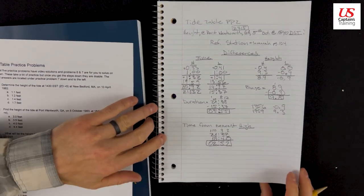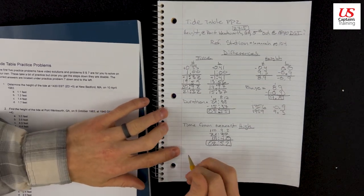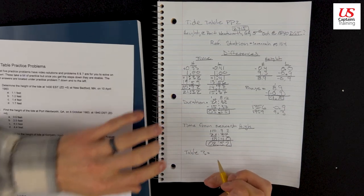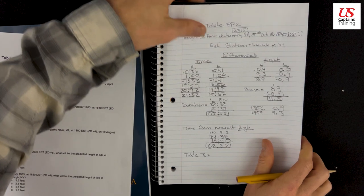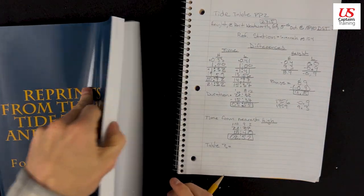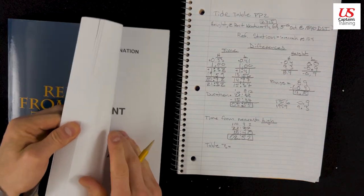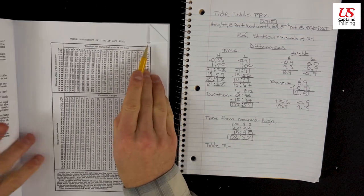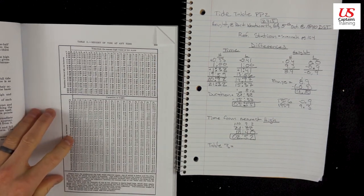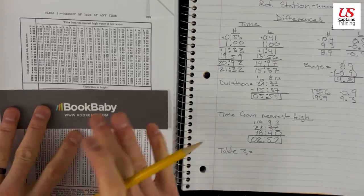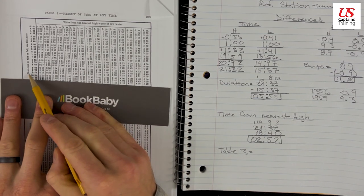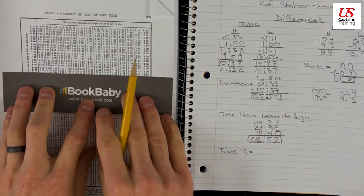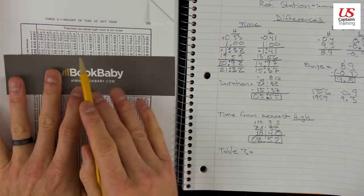So now we have the information to enter table 3. What do we get from table 3? From table 3, we get the height of the tide at any time. I always bend the corner of table 3 so I can find it. It's on page 239. And now get some straight edges. And we enter in here from duration of rise or fall. Our duration was 5:55. We go to the closest, which is 6.